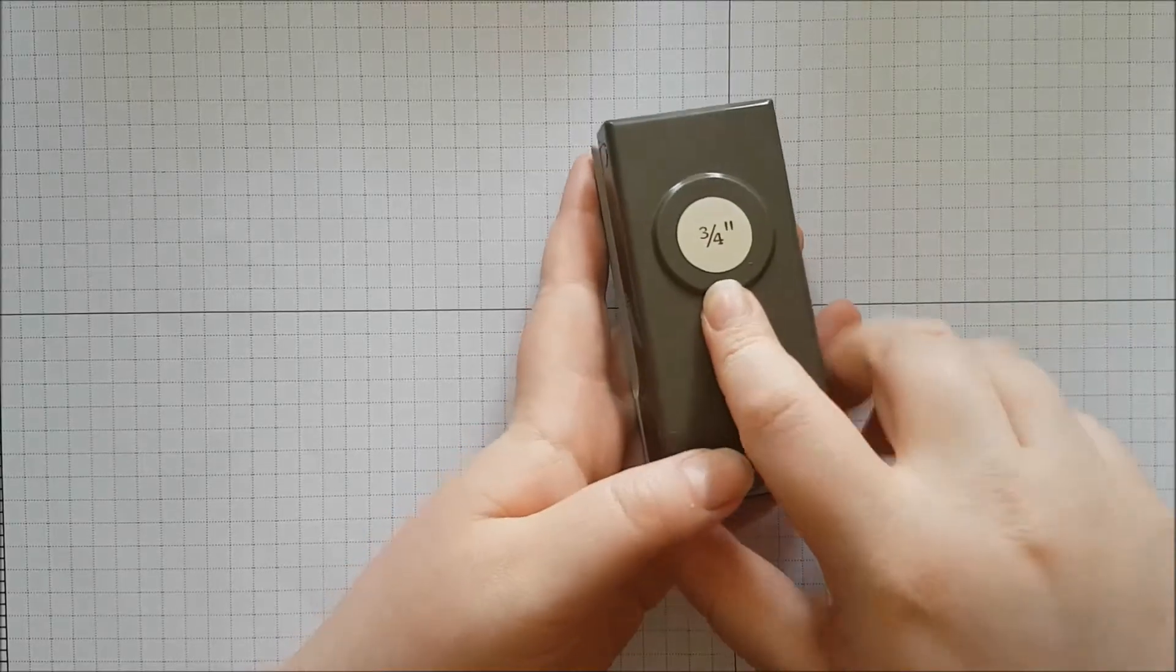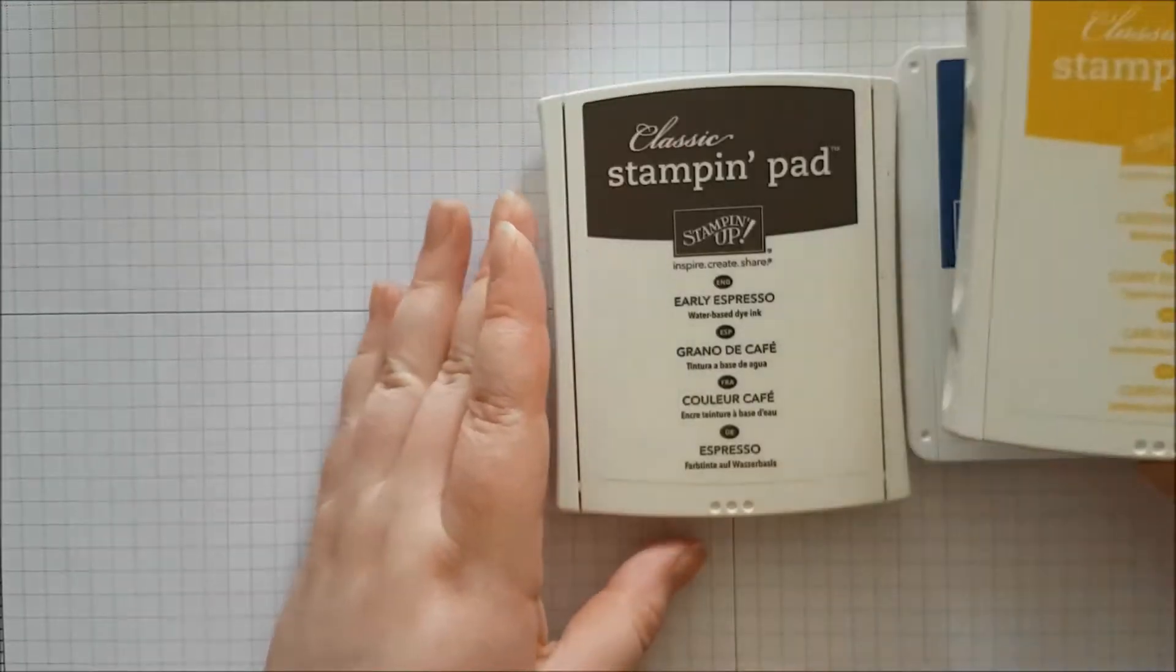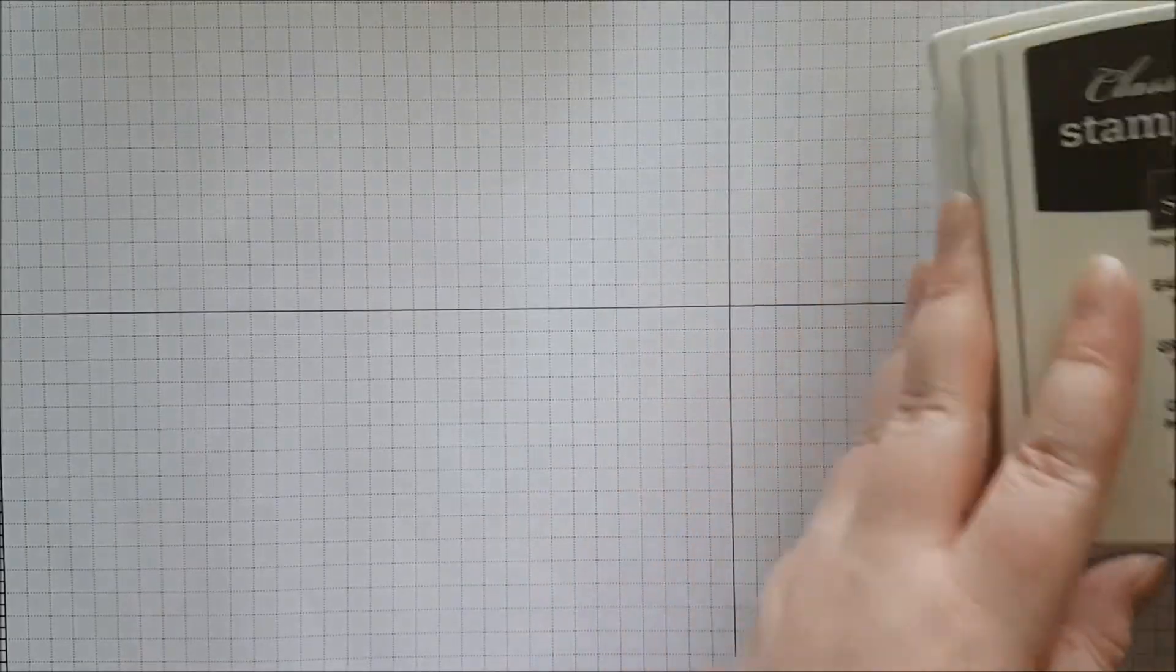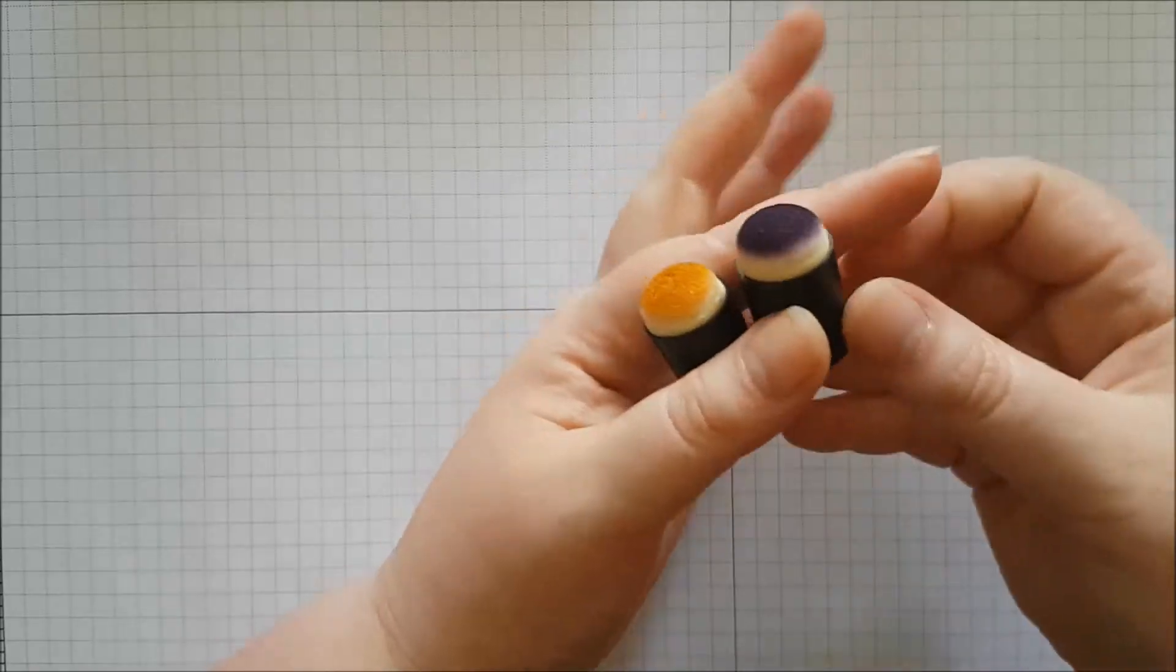You'll also need the three-quarter inch punch. For inks we're going to be using Blueberry Bushel, Crushed Curry, and Early Espresso. And you're going to need a couple of sponge dabbers because we're going to be sponging the edges of our bottles.